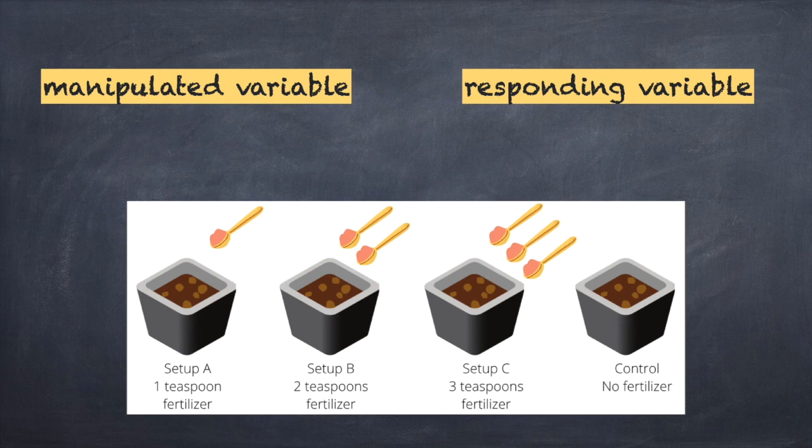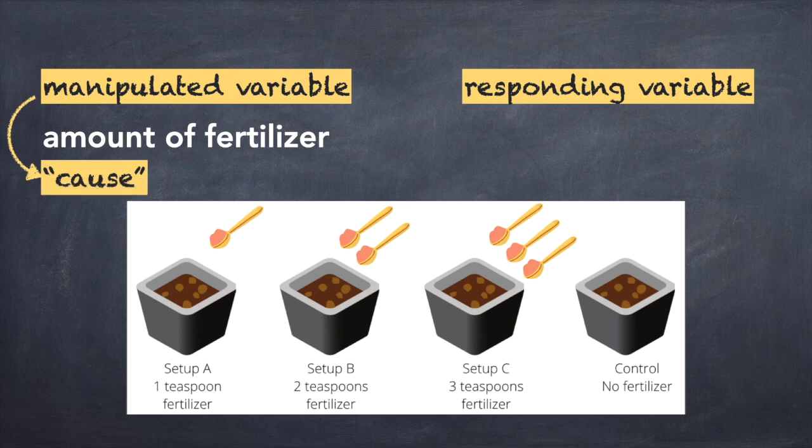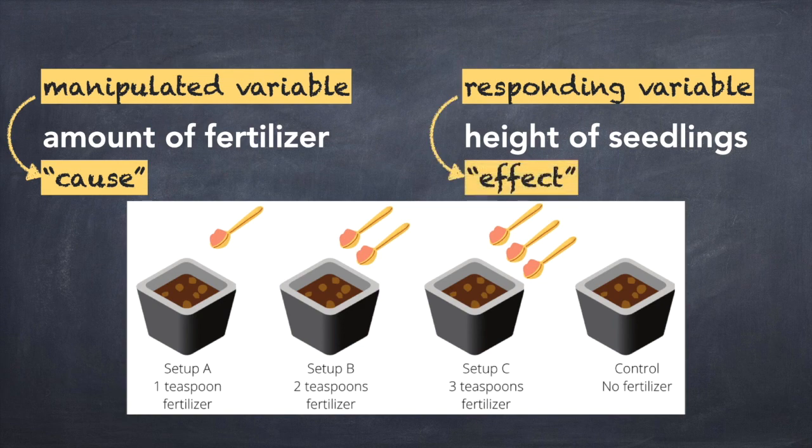The manipulated variable here is the amount of fertilizer because this is the variable that we change or manipulate and therefore the cause in the experiment. The responding variable on the other hand is the height of our seedlings. This is the variable that changes because of the change in the manipulated variable and therefore regarded as the effect in the experiment.